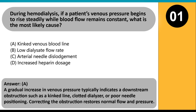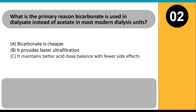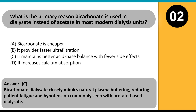Correcting the obstruction restores normal flow and pressure. What is the primary reason bicarbonate is used in dialysate instead of acetate in most modern dialysis units? A. Bicarbonate is cheaper. B. It provides faster ultrafiltration. C. It maintains better acid-base balance with fewer side effects. D. It increases calcium absorption.